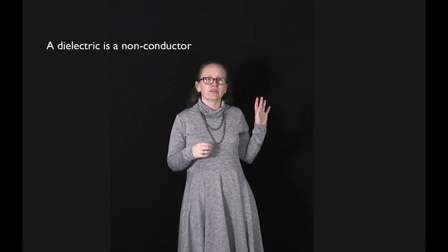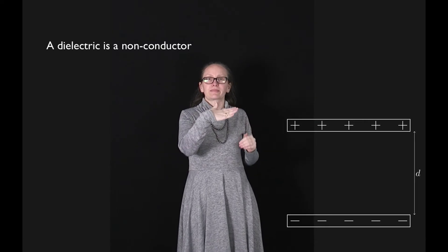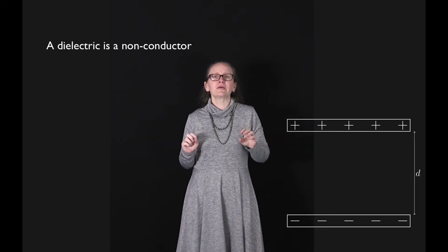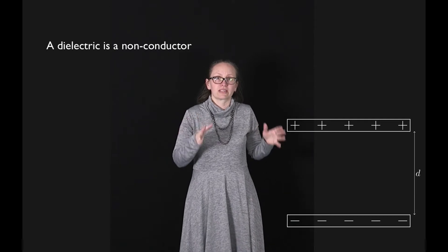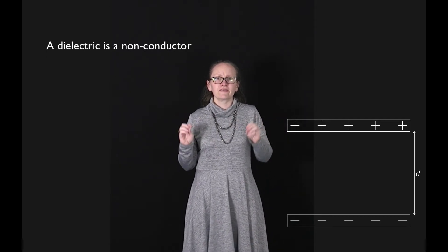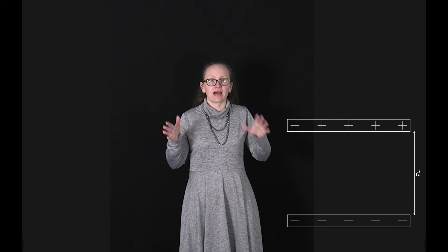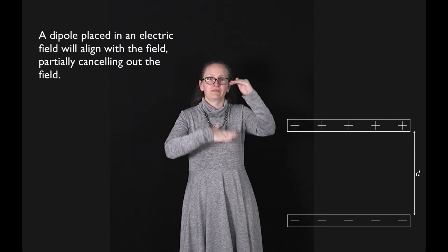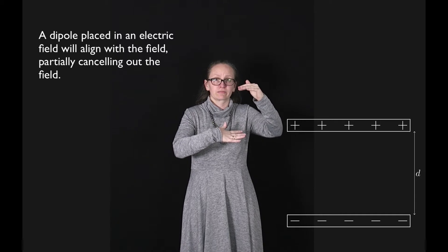We're now going to look at what happens when we place a dielectric, which is a non-conductor, between two capacitor plates such as these ones. But before we do this, I want you to recall a couple of points we've already seen. When we place a dipole into an electric field, it will align with the electric field.